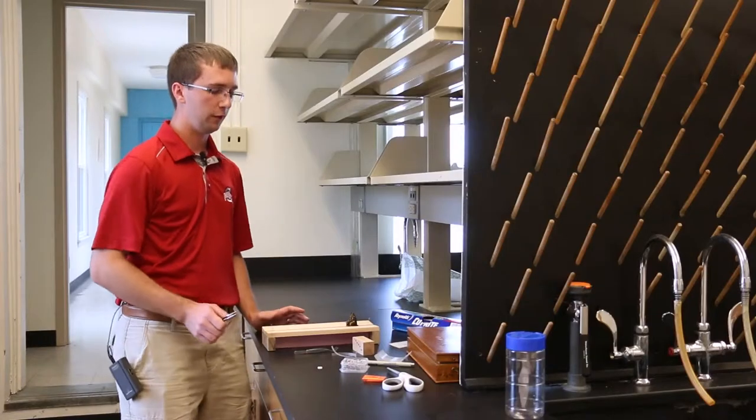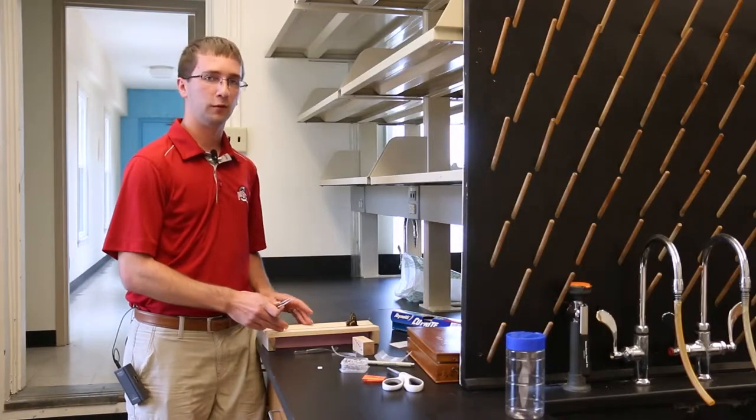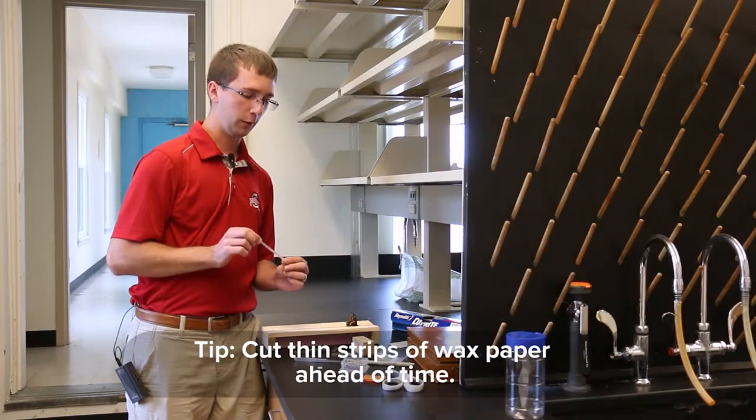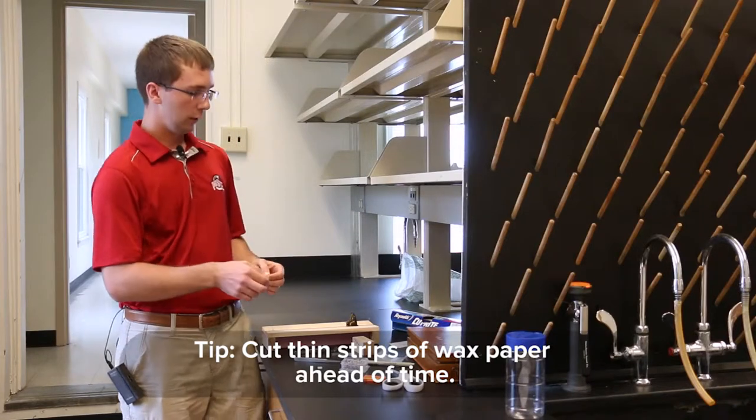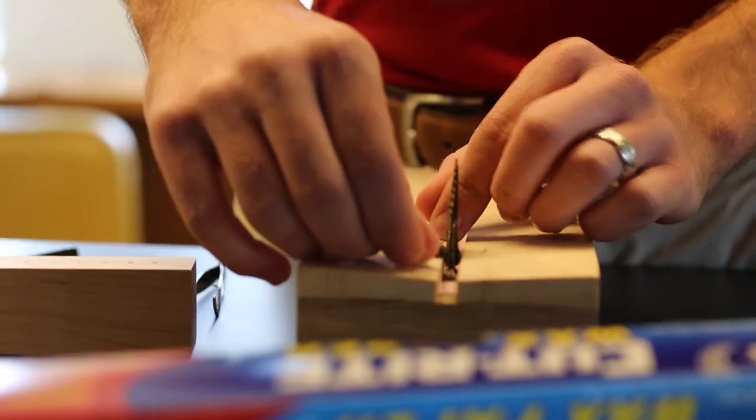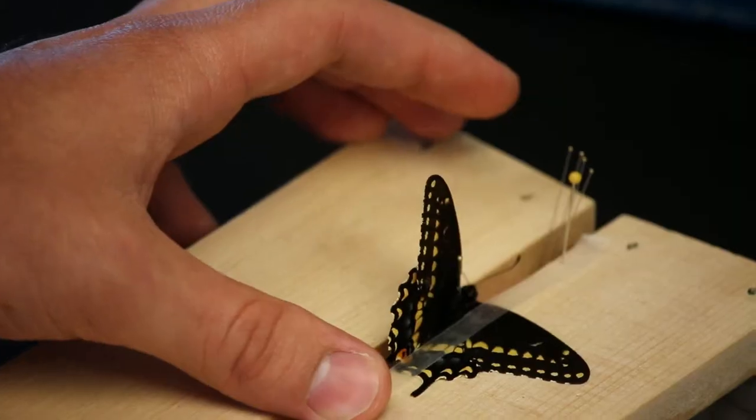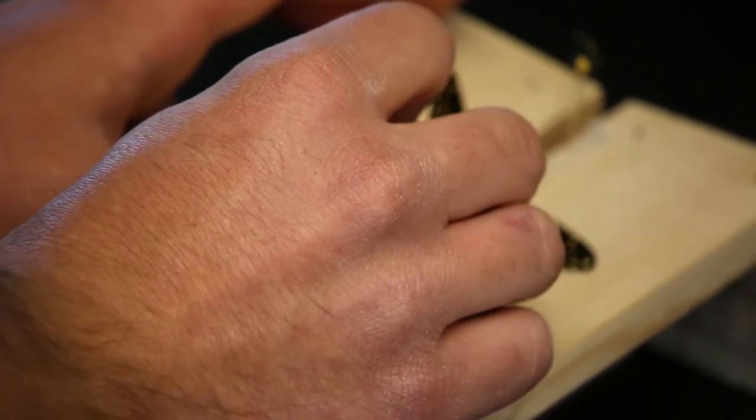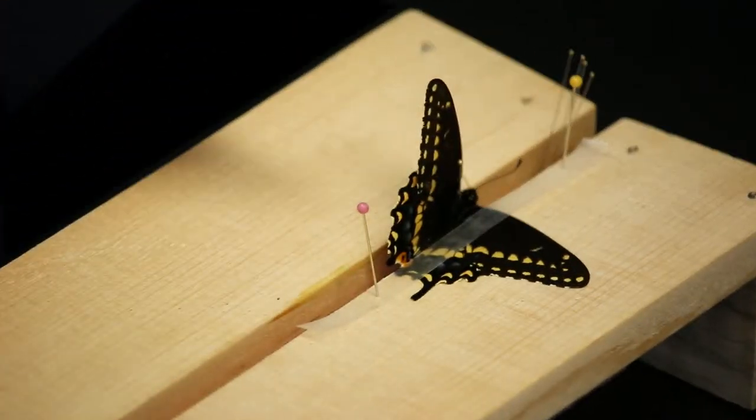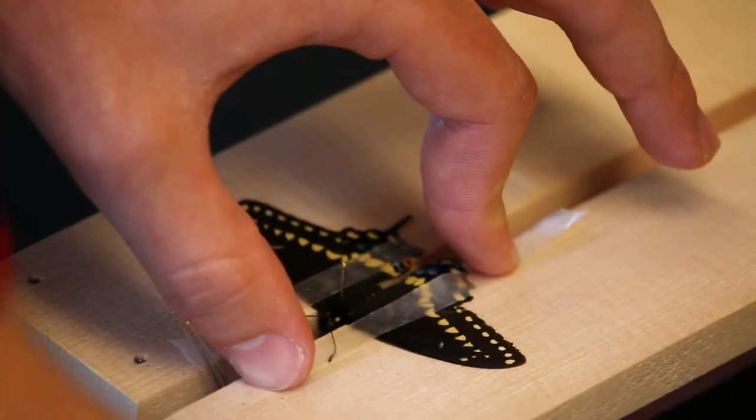After the wings are at a level surface with the spreading board, I take a very thin strip of wax paper and lay it on one side of the wings to hold the wings down. Then I take a couple sewing pins and pin the wax paper to the spreading board. I do the same thing with the other set of wings. As you can see, this process can take a little bit of time.